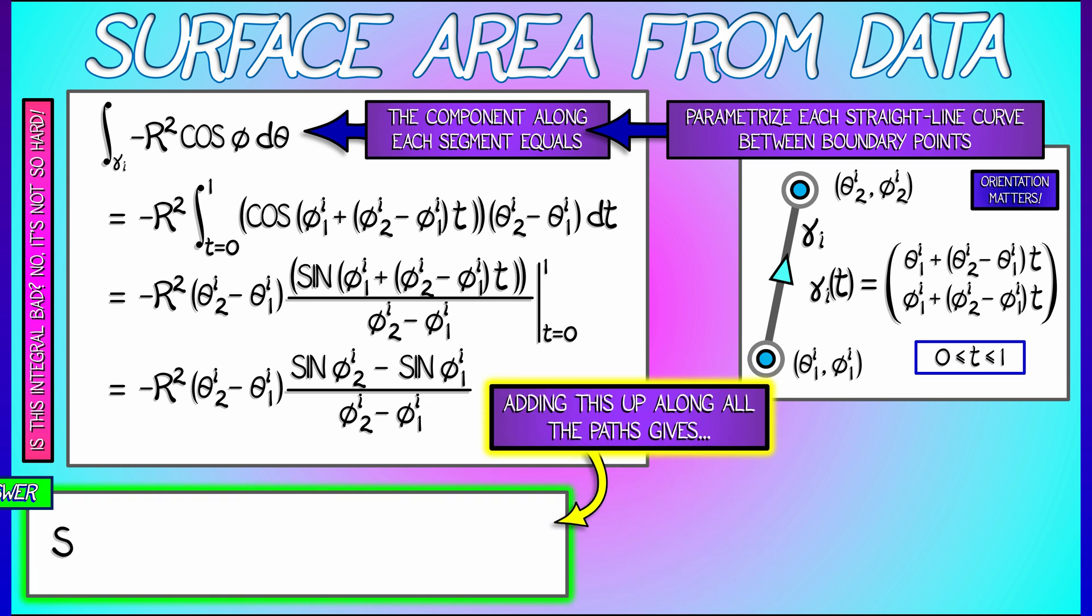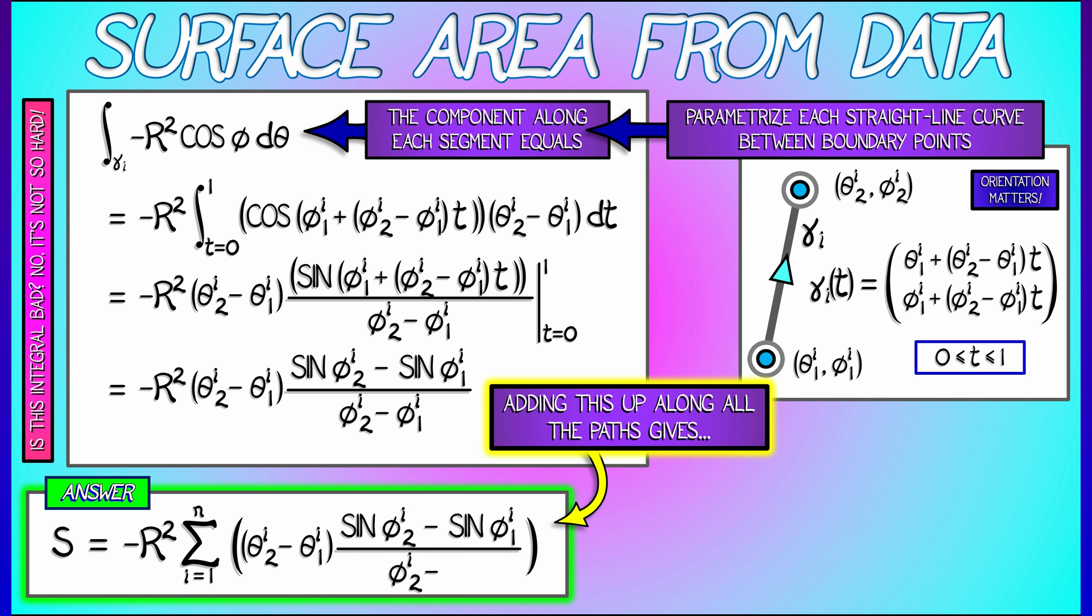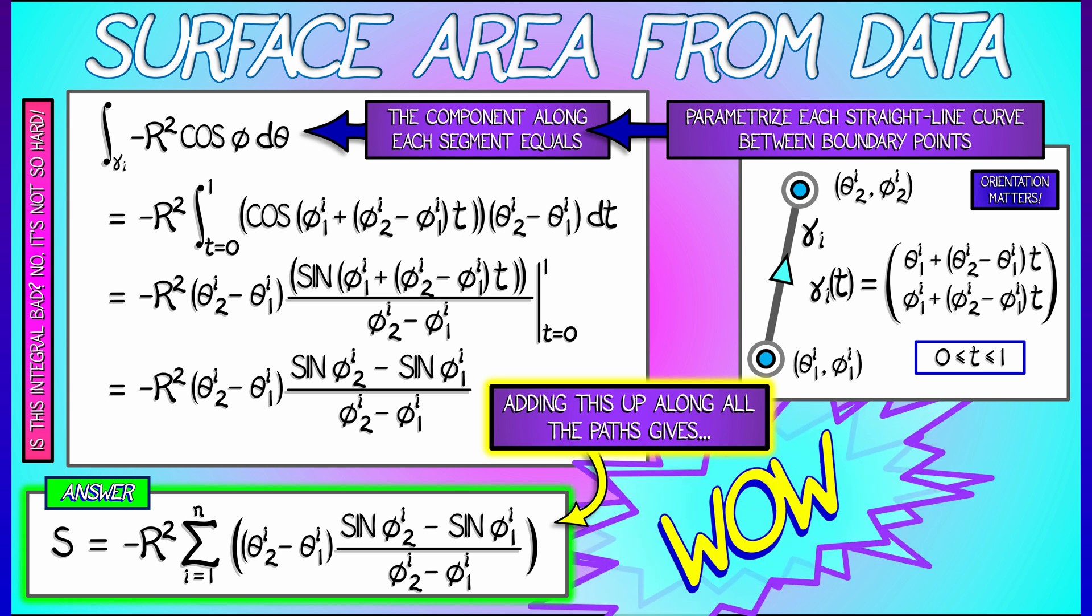Each of these involves the ith data points. So to get the net surface area, we need to take the sum of these as i goes from 1 to n, getting minus R² times the sum θ₂ minus θ₁ times sin φ₂ minus sin φ₁ divided by φ₂ minus φ₁, all of those with i's. And wow, this is really cool.